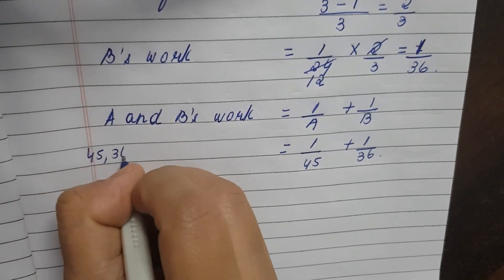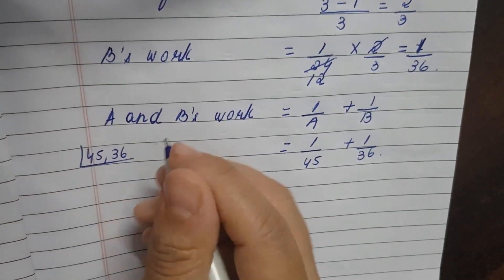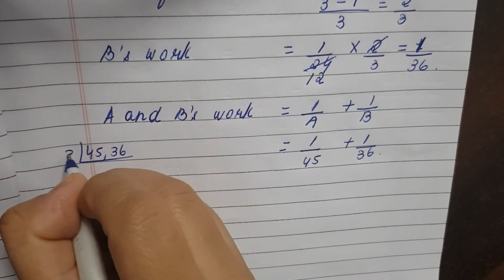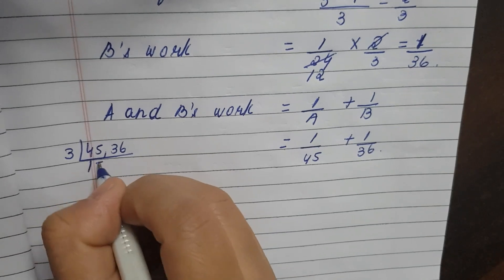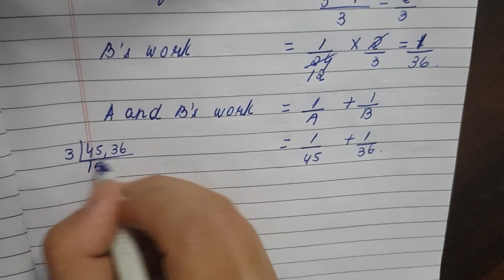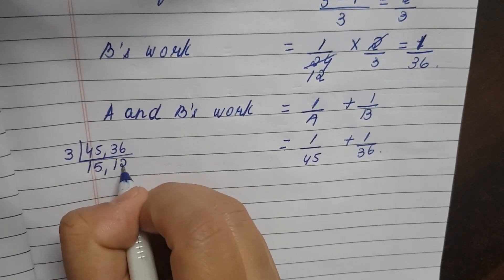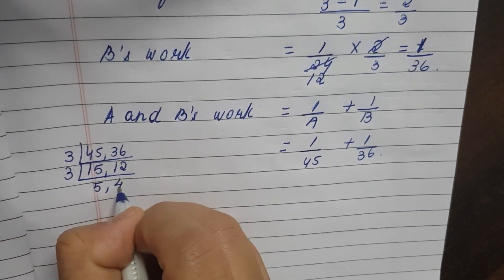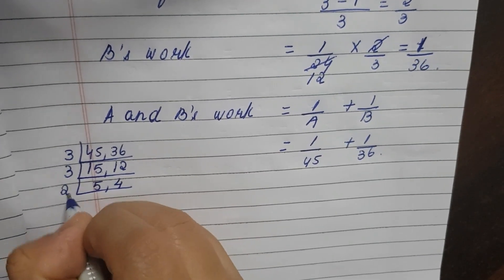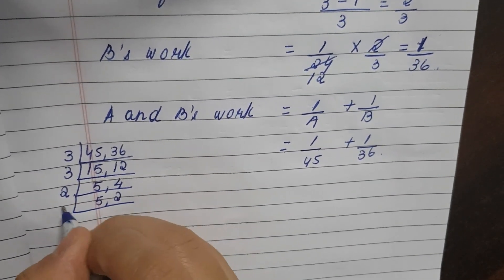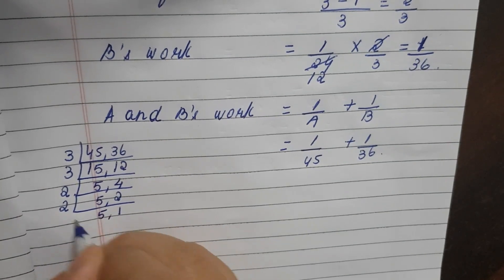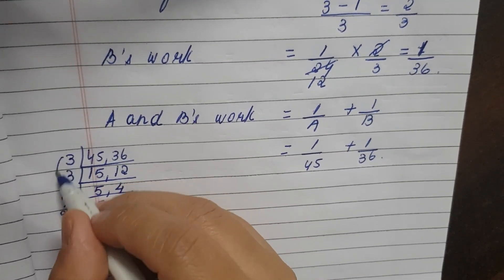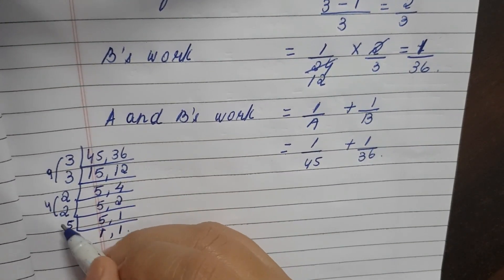45 and 36, we need LCM. See, both goes in 3 times tables. So 3, 45 goes 15 times and 36 goes 12 times. Again 3, 5, 4. So now we take 2, 5, 2. Again 2, 5, 4.